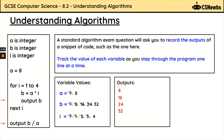Now we're moving on to the final line because the for loop is no longer true — it's no longer between 1 to 4 if we were to increase I to 5. Our final line says B divided by A. B is 32, A is 8, and 32 divided by 8 is 4.